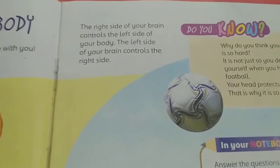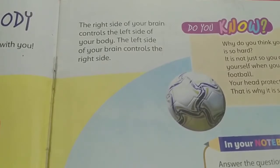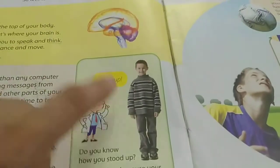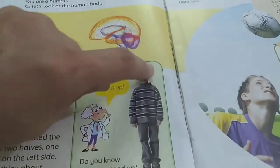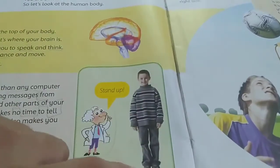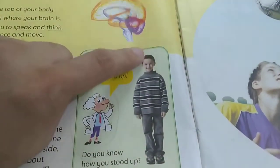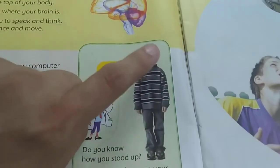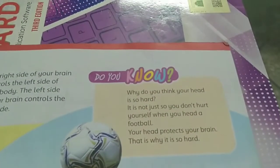The right side of your brain controls the left side of your body, and the left side of your brain controls the right side of your body. That is very interesting! We might think this part controls this part, but that is wrong — the right side controls the left side and the left side controls the right side.